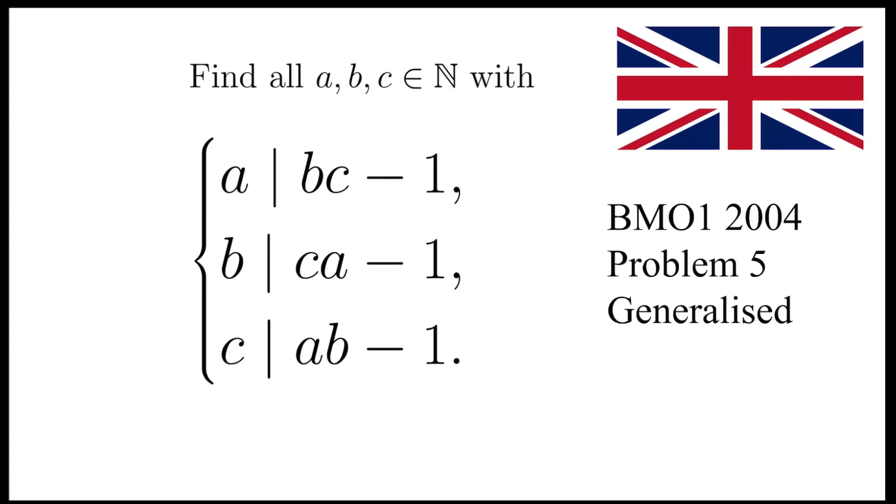In this video, we're going to find all natural numbers A, B, and C, such that A divides BC-1, B divides CA-1, and C divides AB-1, all at the same time.